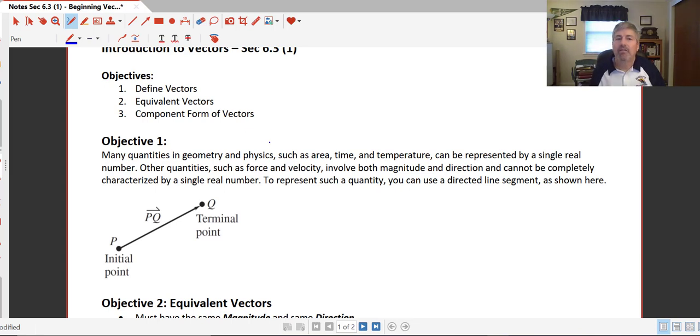Many quantities in geometry and physics, such as area, time, and temperature, can be represented by a single real number. Other quantities, such as force and velocity, things you might use in physics, involve both magnitude and direction, and they can't completely be characterized by a single real number.